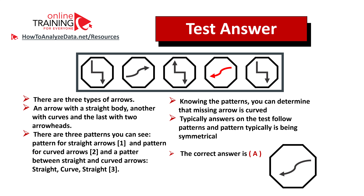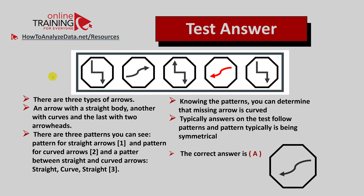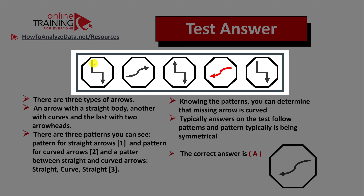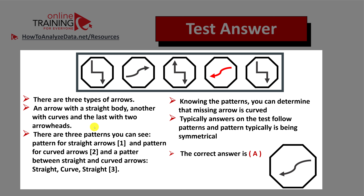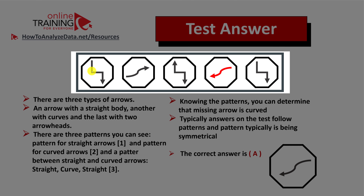Let me explain how you can come up with the solution on your own. What we see here is three types of arrows: an arrow with a straight body, an arrow with a curved body, and an arrow with two arrowheads. My recommendation is always look for patterns. Shapes 1, 3, and 5 are straight arrows, and shapes 2 and 4 contain curved arrows.